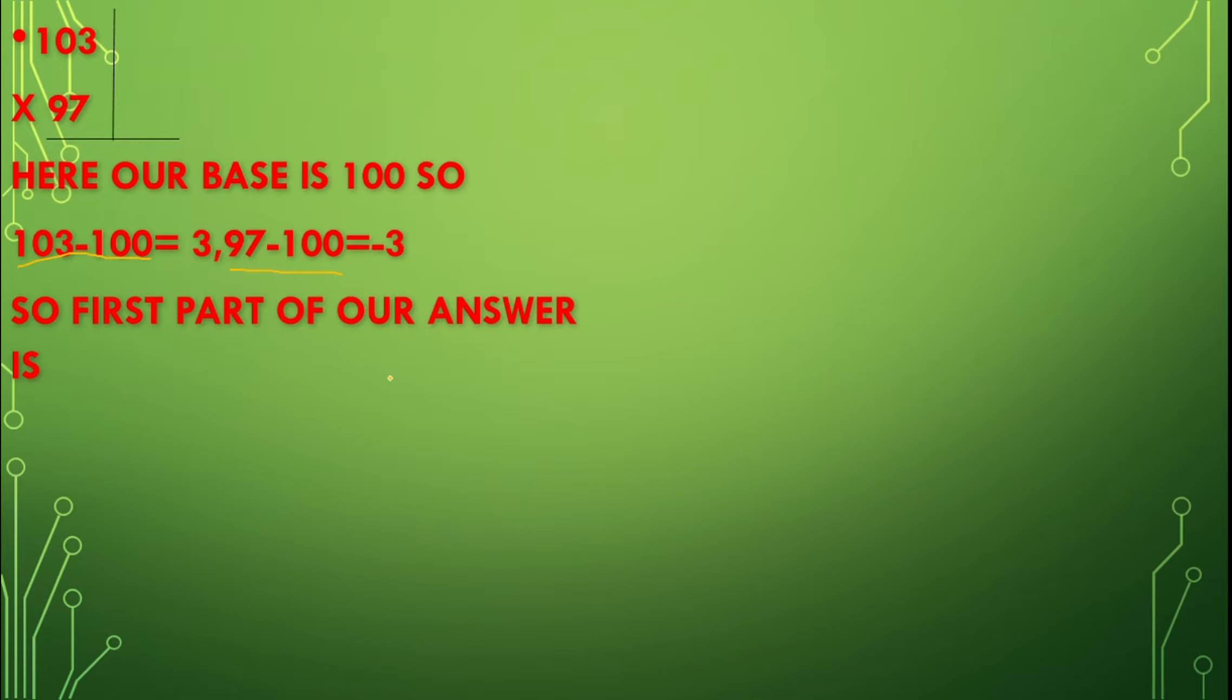Now let's see another example: 103 into 97. Here our base is 100, so 103 minus 100 equals plus 3, and 97 minus 100 equals minus 3. First part of our answer is: